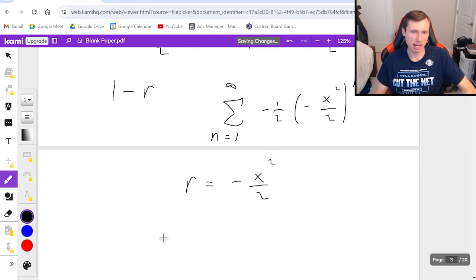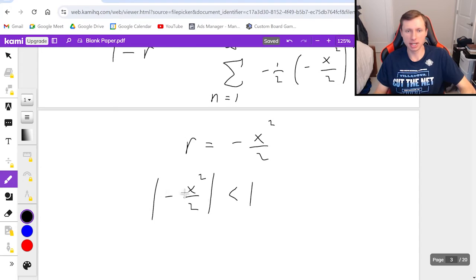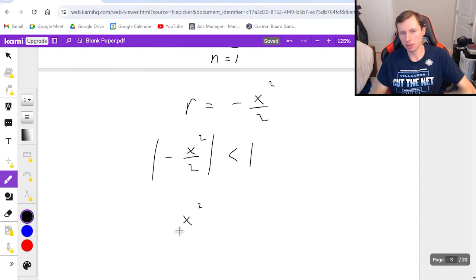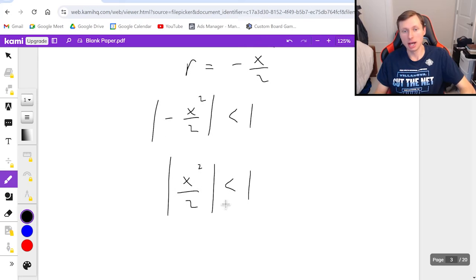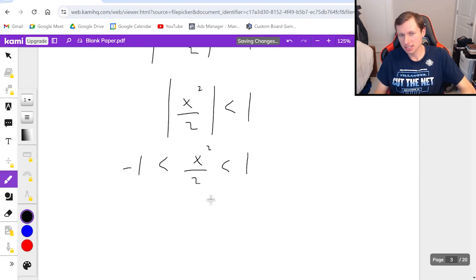And to solve this, I have to say the absolute value of negative x squared over 2 has to be less than 1. The good news is the negative sign goes away because of the absolute value part. And once I get here, I need to again sandwich it in between negative 1 and positive 1. Now I have to solve for x. That means multiplying both sides by 2. So negative 2 less than x squared less than 2.